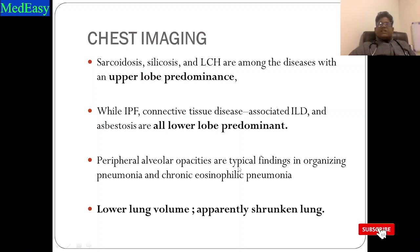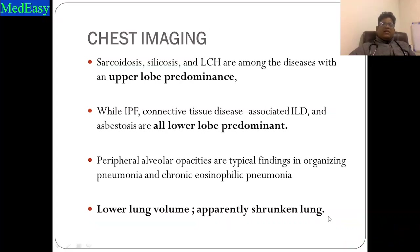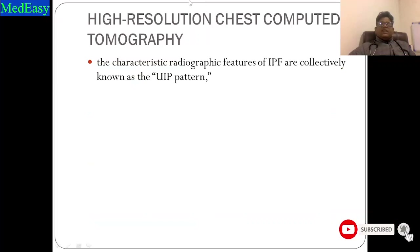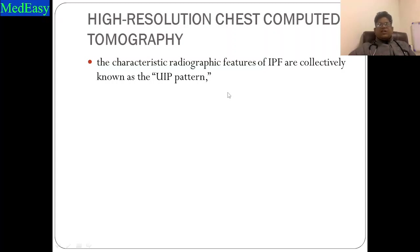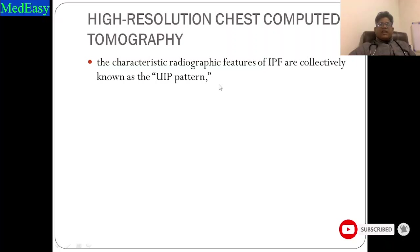Peripheral subpleural opacities are typical of organizing pneumonia and chronic eosinophilic pneumonia. In ILD, lungs appear smaller and shrunken — lower lung volumes. HRCT is the key imaging modality, and ILDs are now diagnosed based on typical CT findings according to recently updated criteria.